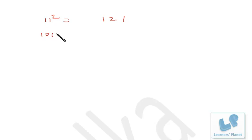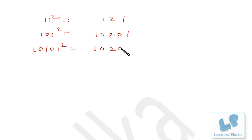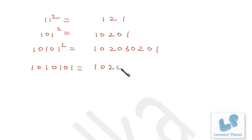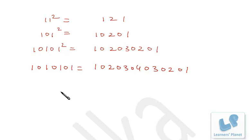Another pattern: 11²=121; 101²=10201; 10101²=102030201; 1010101²=1020304030201. You can continue this pattern further. Each additional separated 1 adds the next count in the middle of the result.